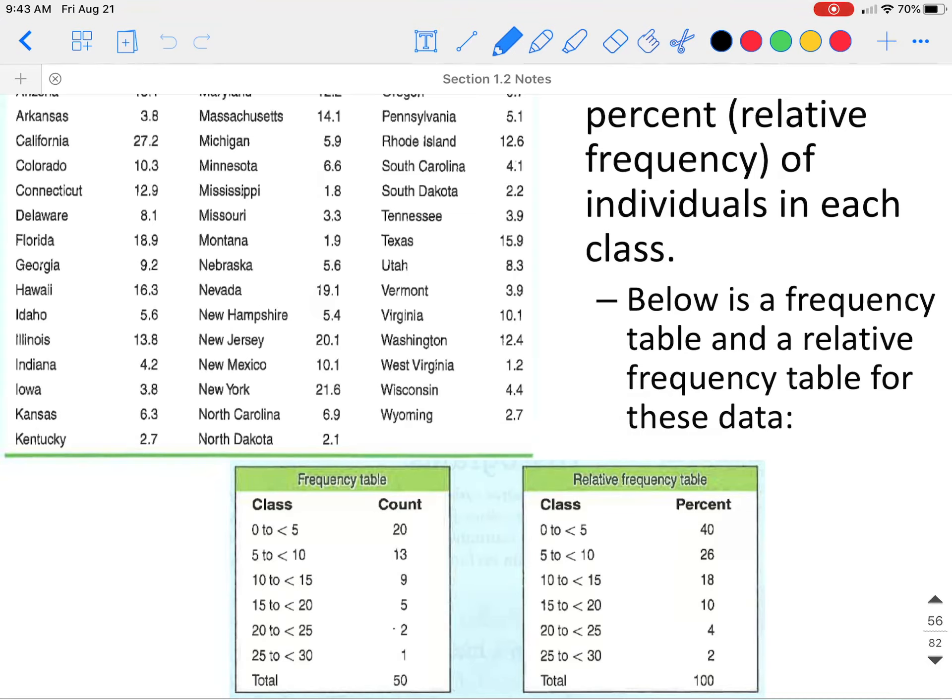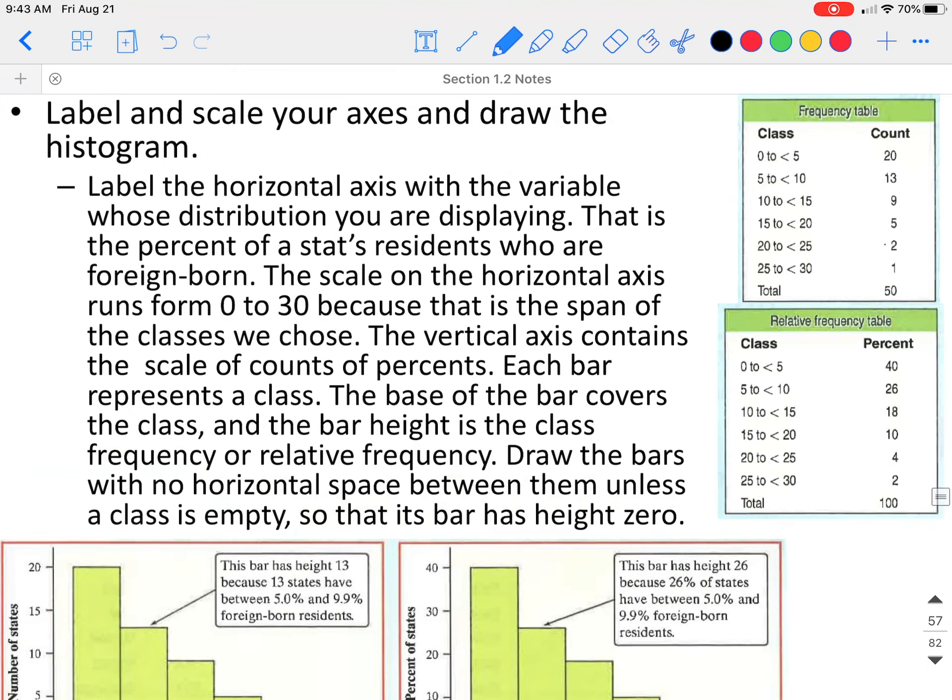If you wanted to make this into a percent, you would take this 20, 20 times out of 50, or 40% of the time the value is from 0 up to 5. 13 out of 50 would give us 26%. So you can do this as a count or as a percent.